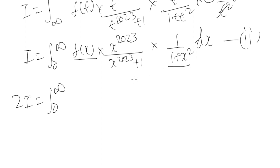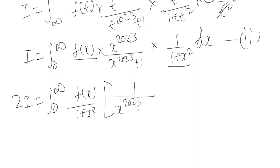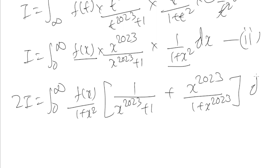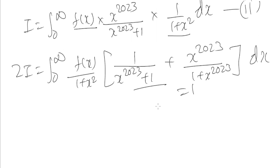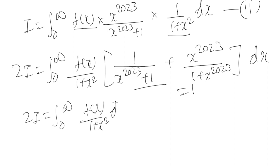If we add both equations, we get 2I equal to the integral from 0 to infinity. The term f(x) / (1 + x²) is common in both, so we factor it out. In the first we have 1 over (x^2023 + 1), and in the second we have x^2023 over (x^2023 + 1). This whole term equals 1, so we are left with 2I equal to the integral from 0 to infinity of f(x) / (1 + x²) dx.